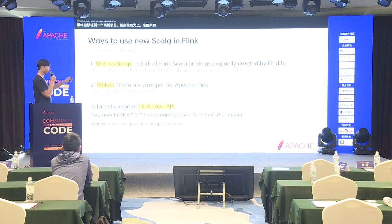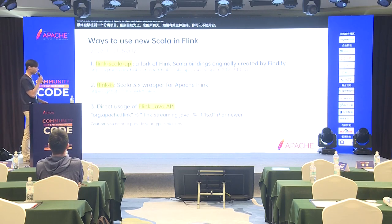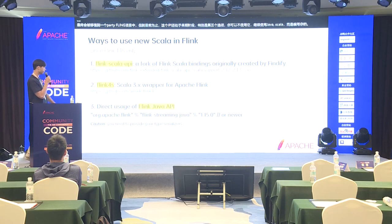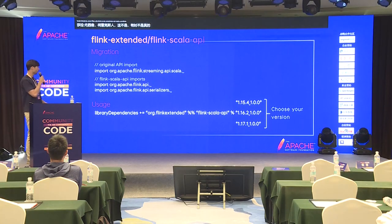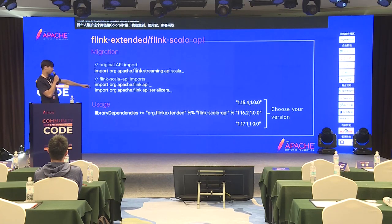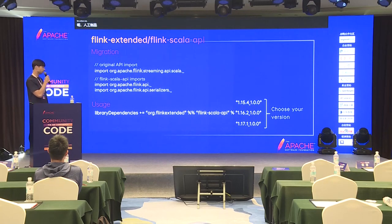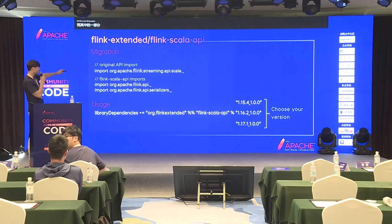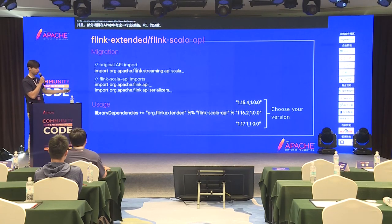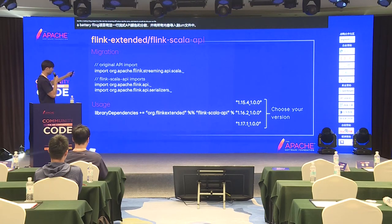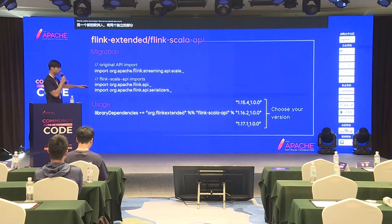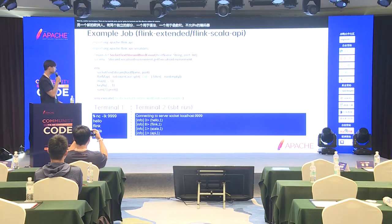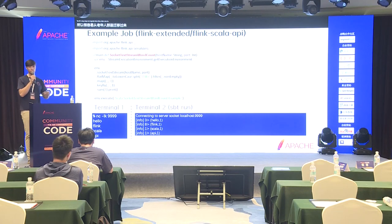A third option is to not use those libraries and continue using the Java API from Scala, but write your serialization codecs manually, which is sometimes not really a problem. I personally maintain the Flink Scala API library in flink-extended. To use it, you take the artifact into your build system — Maven, SBT, or whatever you're using. The change in terms of imports is very simple: the original Apache Flink API has one import line with streaming API Scala underscore, which imports everything. With the newer API there are two separate imports — one for syntax/functions and one for codecs/serialization. So it's very easy to migrate from the older one to the newer one, which supports the new Scala version.